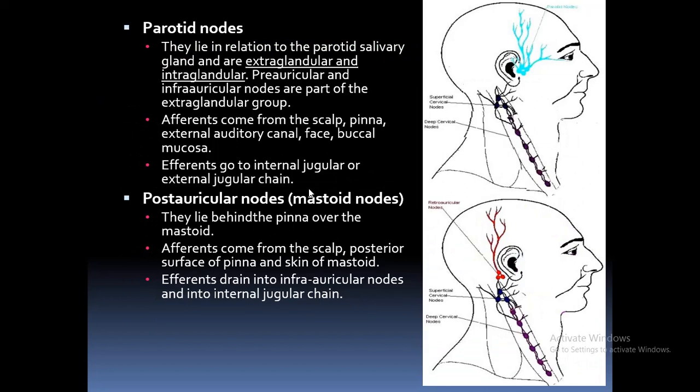Then the parotid nodes. They lie in relation to the parotid salivary glands and are extra-glandular and intraglandular. Preauricular and infraauricular nodes are part of the extra-glandular group. Afferents come from the scalp, pinna, external auditory canal, face, and buccal mucosa; efferents go to the internal jugular or external jugular chain. The postauricular nodes, also called mastoid nodes, lie behind the pinna over the mastoid. Their afferents come from the scalp, posterior surface of pinna, and skin of mastoid; efferents drain into infraauricular nodes and the internal jugular chain.